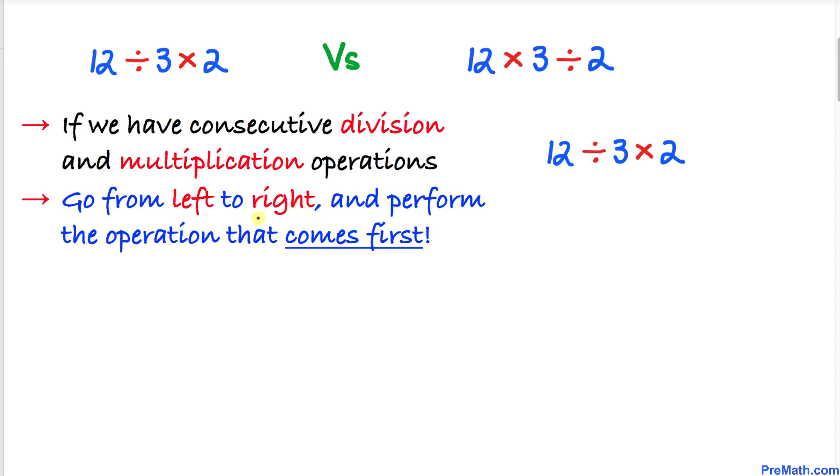And here's the rule. We are going to go from left to right and whichever coming first we are going to take care of that thing and we can see that division is showing up first. So we're going to take care of 12 divided by 3 first. Therefore 12 divided by 3 is going to be 4 and then times 2 and that is going to give us 8 as our correct answer.